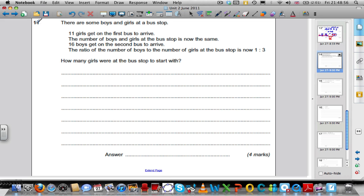Question 11. A lot of people struggled on this one. Keep your wits about you. Slow down. Read the question a few times till it makes sense. There are some boys and girls at a bus stop. 11 girls get on the first bus to arrive. So, now there are 11 girls less than there were already. The number of boys and girls at a bus stop is now the same. So, the boys have always been 11 less than the girls that were at the start. 16 boys get on the second bus to arrive. So, the boys go down by 16 and the girls have stayed down by 11.